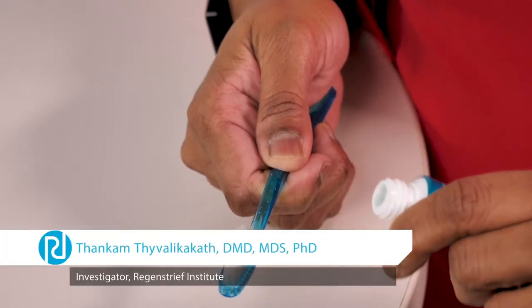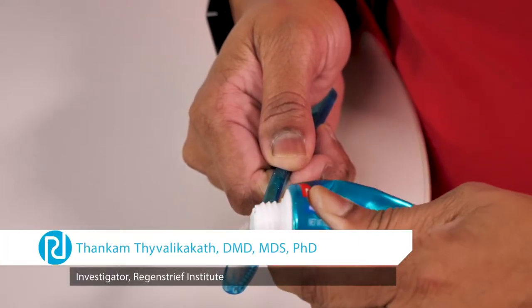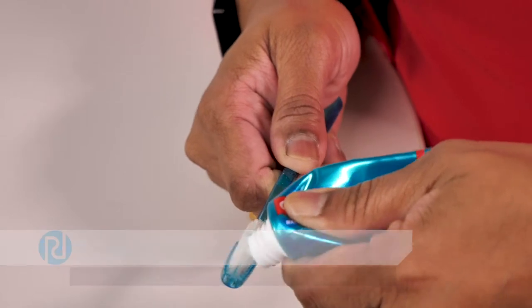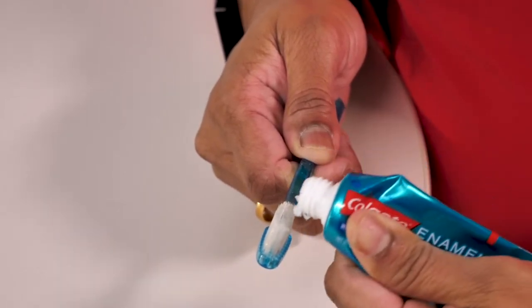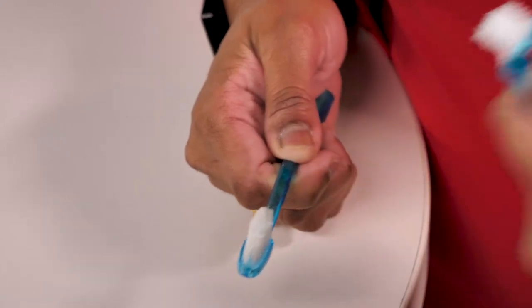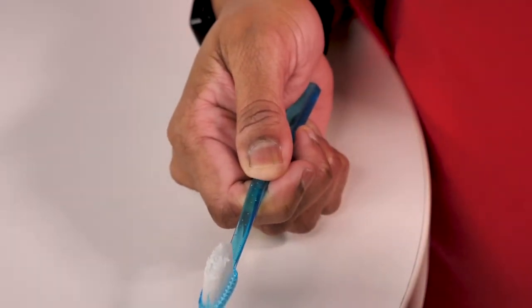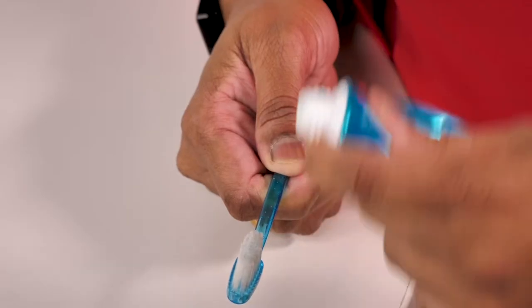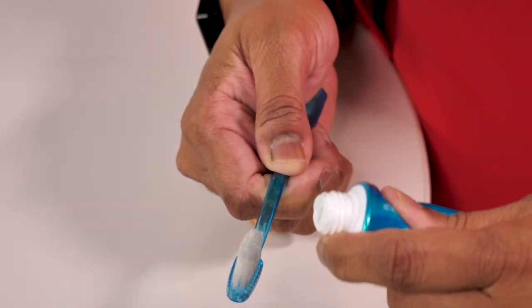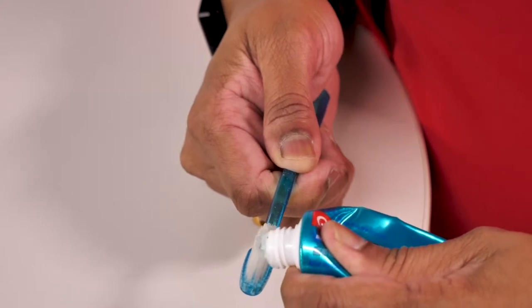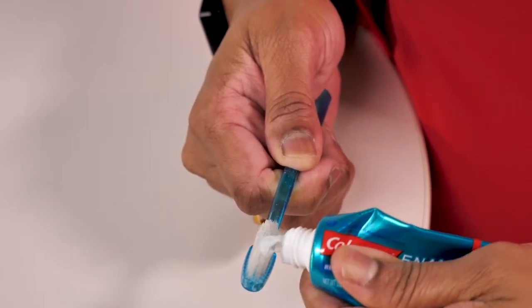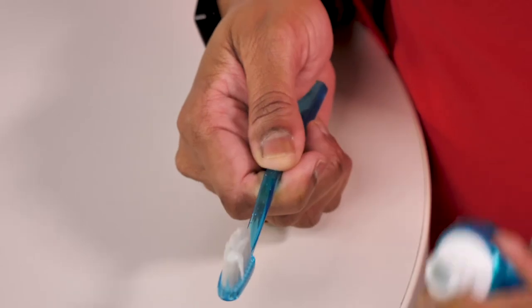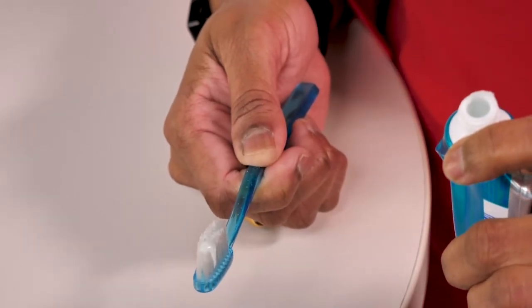For children younger than three years, all they need is a smear of toothpaste, so you just need just this much. That's all you need, see, just a smear. For children older than three years, they just need toothpaste the size of a pea, which is like this size. See, that's all you need. What you need to keep in mind...